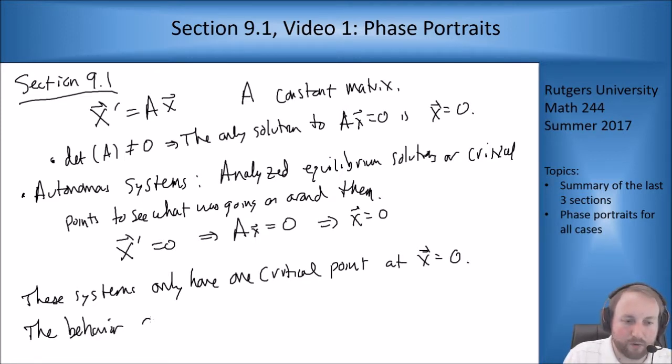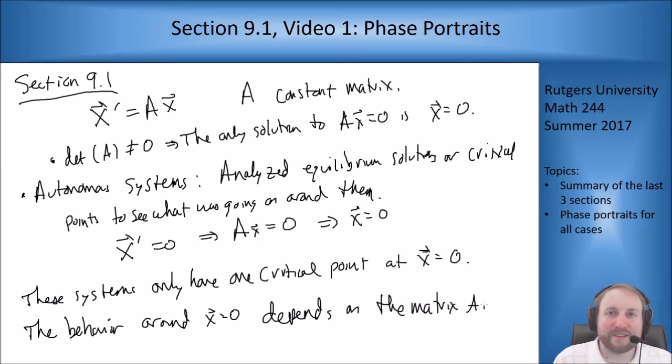The behavior around 0, around x equals 0, depends on the matrix A. For our autonomous case we had y prime equals f of y. Depending on whether f of y was increasing, decreasing, positive, negative, we can determine what happened to solutions near any critical points. Here we have x prime equals a matrix A times x. Properties of this matrix determine what's happening with solutions nearby. That's how we get our set of phase portraits that we've been using all of chapter 7.